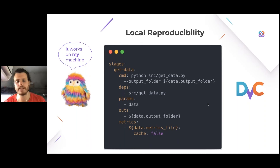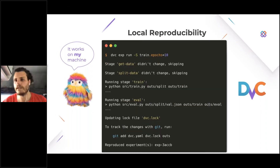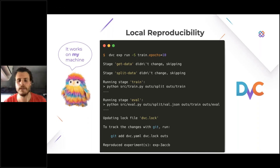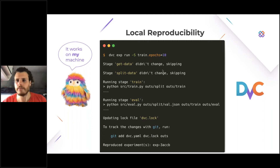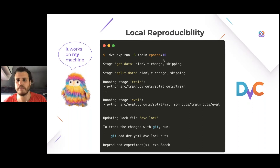There are also some additional machine learning features — special outputs called metrics and plots — that are useful for DVC to later render. Having the pipeline, if I am on my machine I can run the command 'DVC experiment run' and modify parameters on the fly. Because I have a local DVC cache, DVC checks if some of the dependencies have changed or not. In this case the two first stages don't have any changes, so DVC is going to skip those stages and just retrieve the outputs from the cache. But because I modified parameters that affect the training stage, DVC actually recomputes the training stage and the evaluation stage.